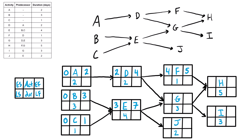Activity G has two predecessors — D and E — so we bring the larger early finish: four or seven, we bring in seven, add the duration of three to get an early finish of ten. Activity J has one predecessor, so the seven from E comes straight in and seven plus two gives an early finish of nine. Activity H has two predecessors, F and G — we take the largest early finish: five or ten, so we bring in ten and add the duration to get fifteen. Activity I has one predecessor, so we bring that ten straight in and ten plus three is thirteen.